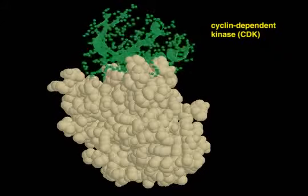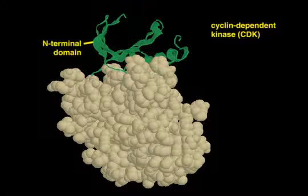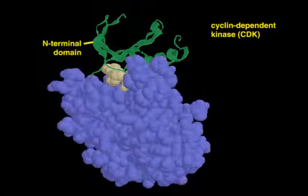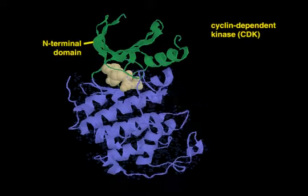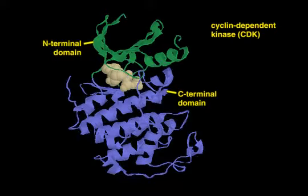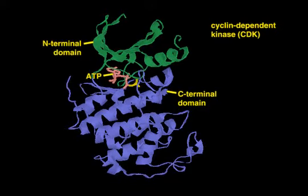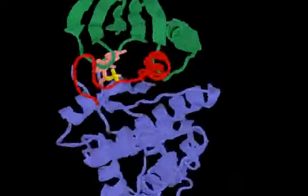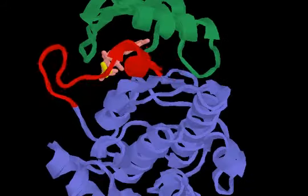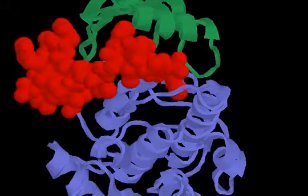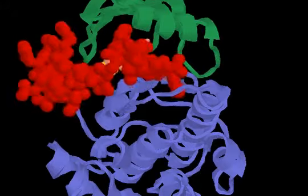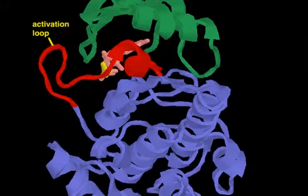Cyclin-dependent kinases, or CDKs for short, are crucial regulatory proteins in the cell cycle. When activated, these kinases transfer phosphate groups from ATP to serine and threonine side chains on target proteins. When inactive, the active site of CDKs is sterically occluded by a loop, often referred to as the T-loop.